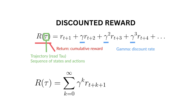So in the equation, capital R of Tau equals R of T plus 1, plus Gamma times R of T plus 2, plus Gamma squared times R of T plus 3, and so on. The Gamma value acts as a weight on each time step as we get a reward.